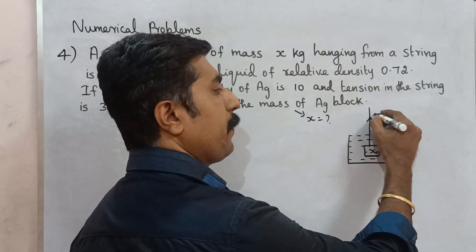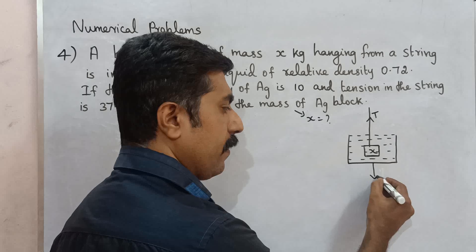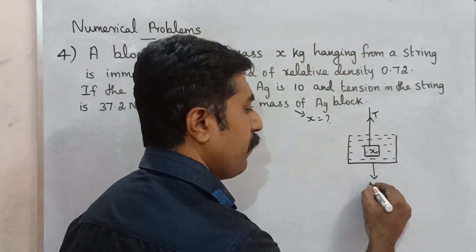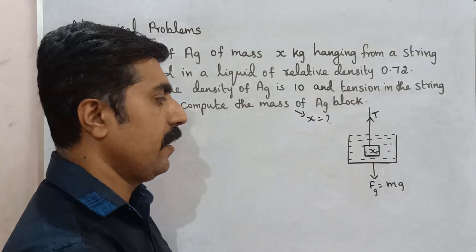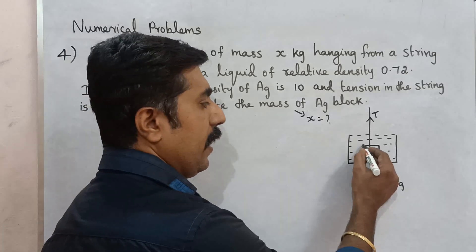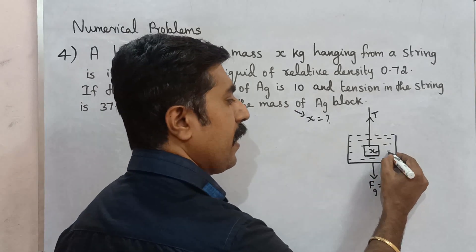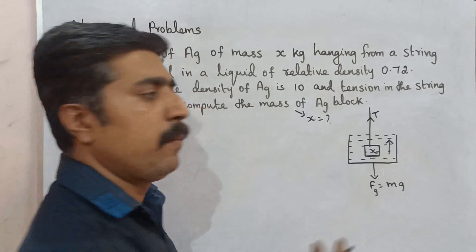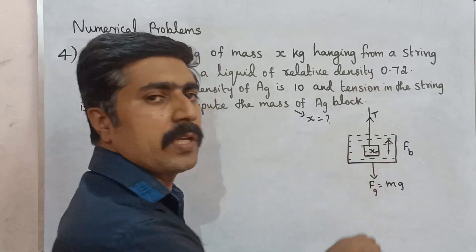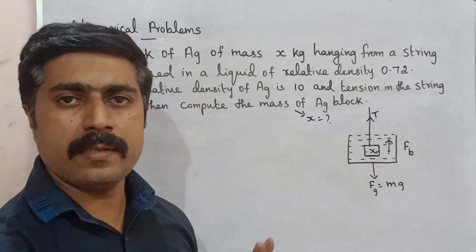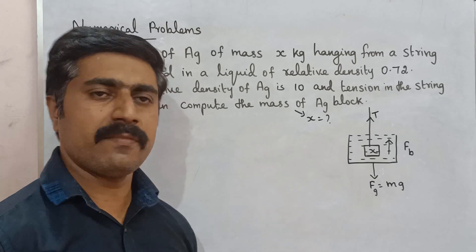There is a force acting upward on the block. The tension acts upward, and the buoyant force also acts upward. The weight acts downward. The block is in equilibrium because the forces are balanced.